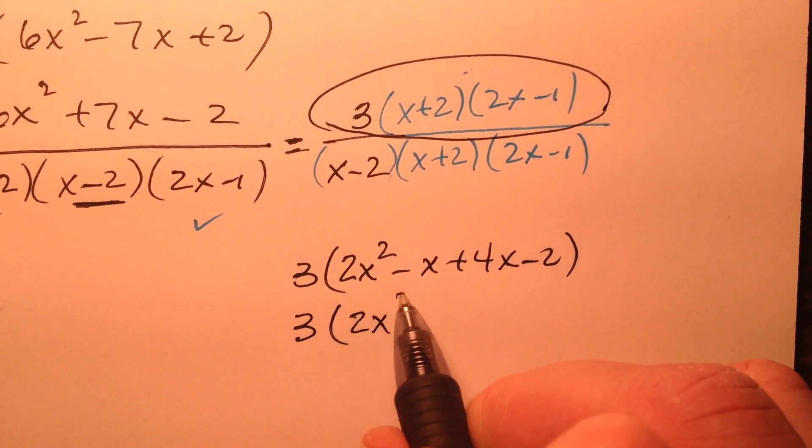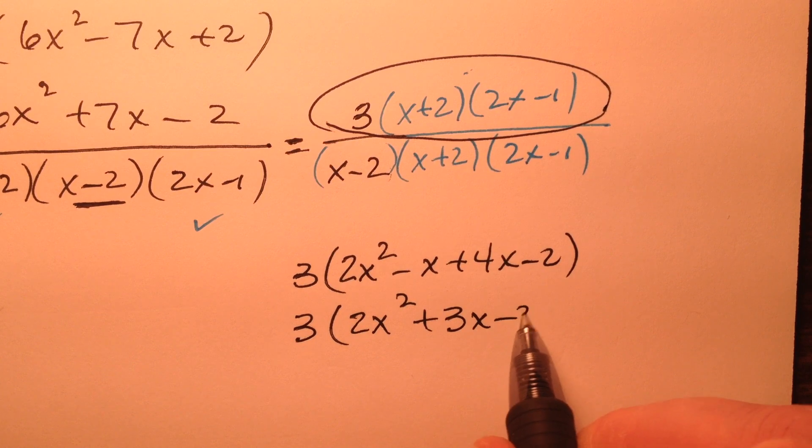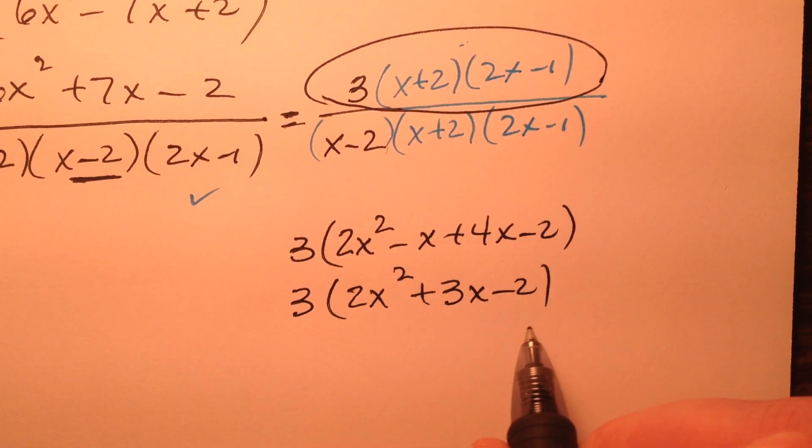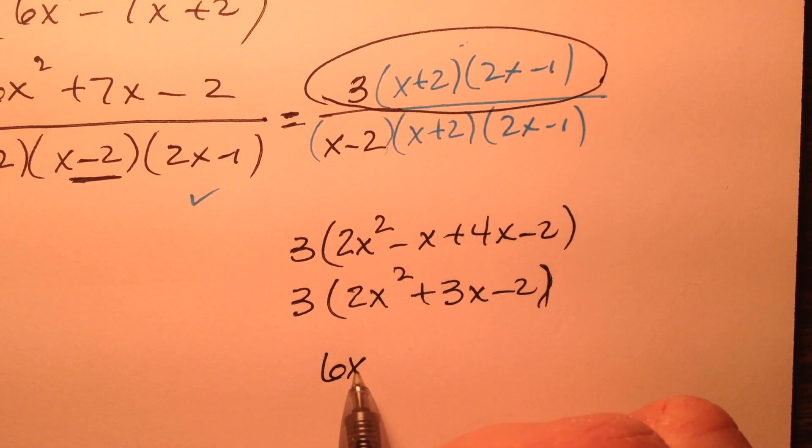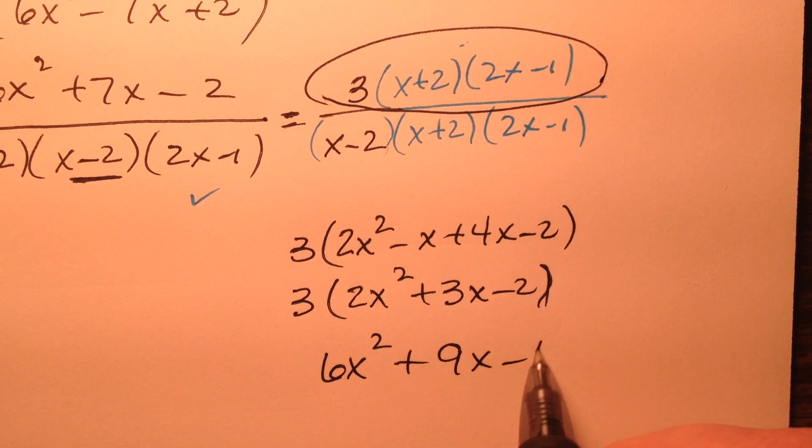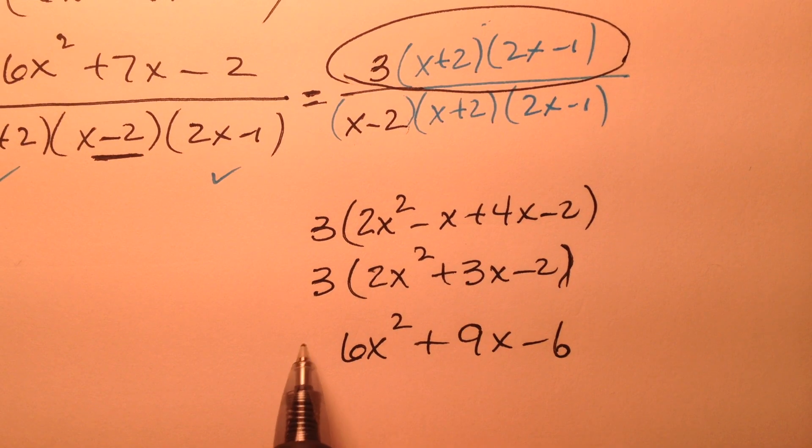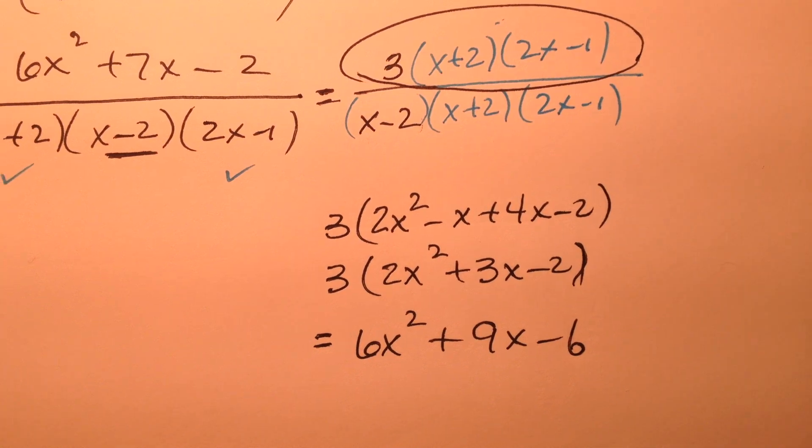So 2x squared plus 3x minus 2, and when I distribute that 3, I'll have 6x squared plus 9x minus 6.